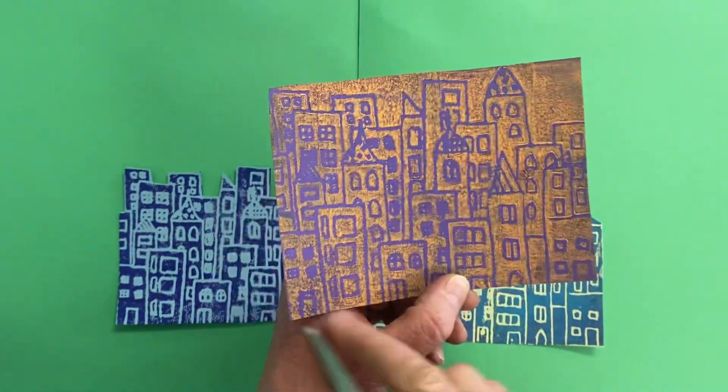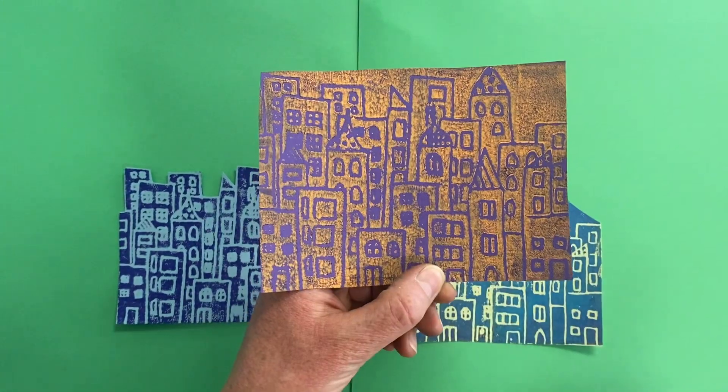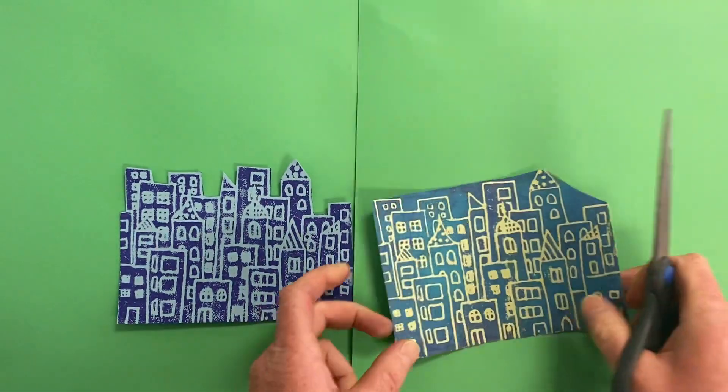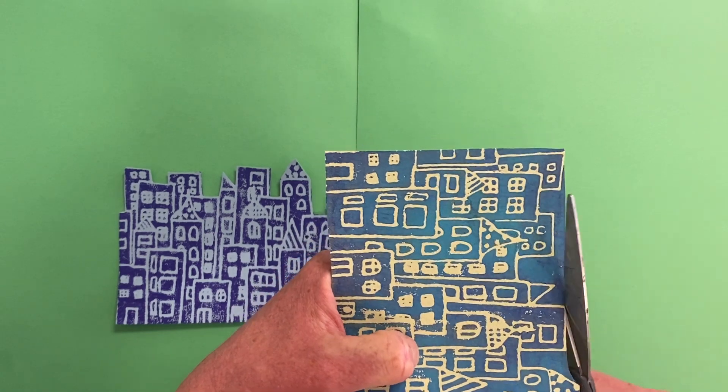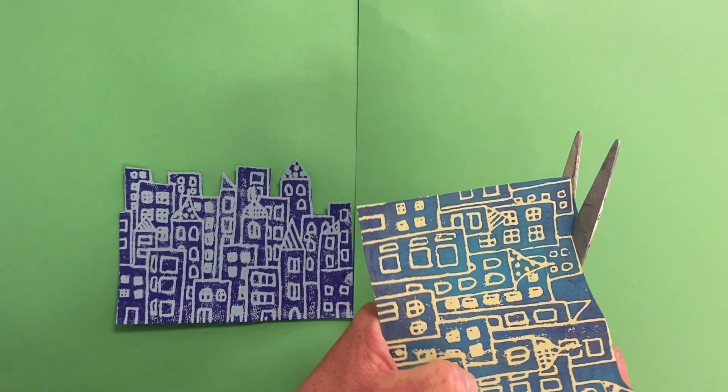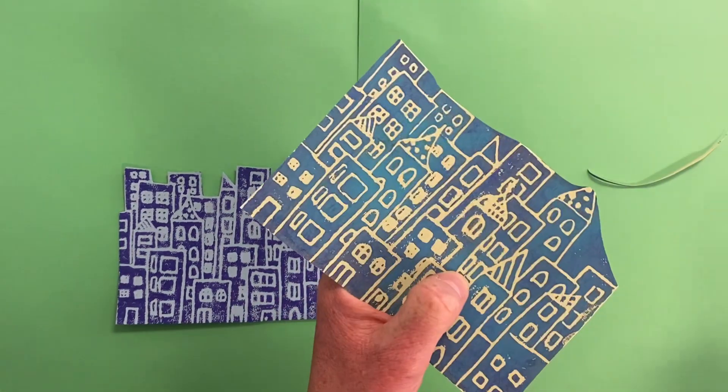First step is to use the scissors to cut all the way around your inked print. Once you've done that, then you're going to go and do a bubble cut around your buildings. So I'm just getting rid of the excess.